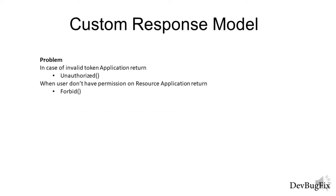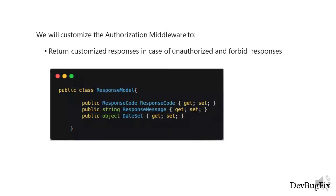In case of an invalid token, the application returns an unauthorized response. When a user doesn't have permission on a resource but tries to access it, the application returns a forbidden response. These two responses don't have a response body — only a response code — creating inconsistency in our application response.